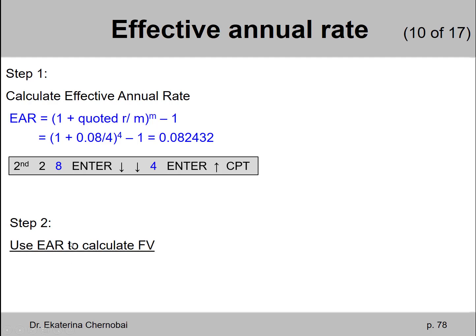So we are using the effective annual rate to calculate the future value. And the effective annual rate is going to be our interest rate in the formula. So we have the future value in 5 years equals $1,000 multiplied by 1 plus 0.082434.